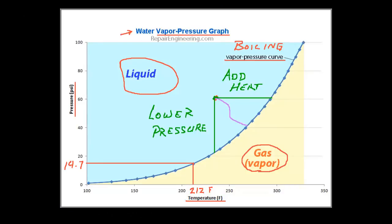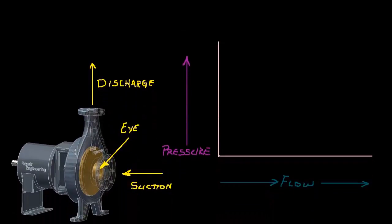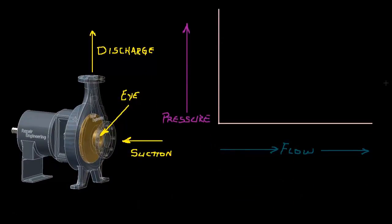In this next example, I'll show how this type of cavitation damage occurs. Here again is the picture of the pump with the areas that we just identified, the suction, the eye of the impeller, and the discharge.